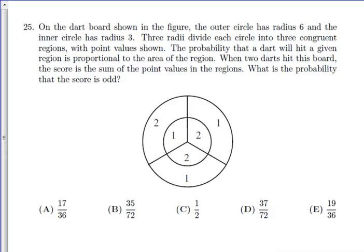This problem is number 25 from the 2007 AMC 8 math competition. And this is a tricky problem because it requires you to know a lot about probability, but also some geometry that is going on here. It says three radii divide each circle into three congruent regions. In geometry, the probability of hitting a certain region is the area of that region over the total area.